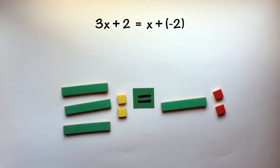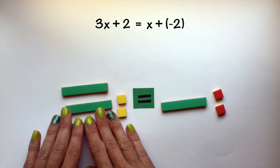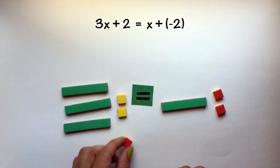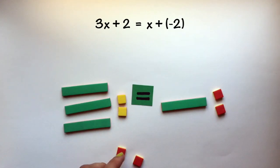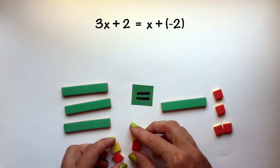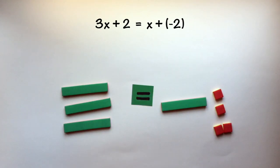Now, we want to try to isolate x on this side of our equation. So, we need to remove positive 2 from this side. We can do so by adding two negative tiles to both sides of my equation, effectively making zero pairs on the left side of my equation to remove the positive 2.